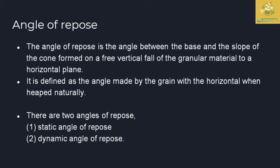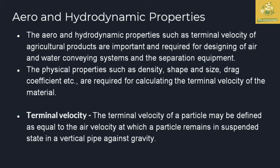Aero and hydrodynamic properties such as terminal velocity of the agricultural product are important and required for designing air and water conveying systems as well as separating equipment for agricultural commodities. Physical properties such as density, shape, drag coefficient, and porosity are required for calculating terminal velocity. Terminal velocity is defined as the air velocity at which a particular particle remains in a suspended state in a vertical pipe against gravity.